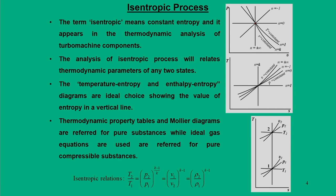Isentropic process relates the thermodynamic parameters between two states. As you can see in the pressure-volume diagram or temperature-entropy diagrams, one can draw various thermodynamic processes involving a constant pressure process, constant volume process, constant temperature or isothermal process, or any process bearing the name polytropic. All these processes are quasi-static in nature, which means we can use the thermodynamic equations for a reversible, internally reversible process. So we have to analyze all these thermodynamic parameters for an isentropic process.